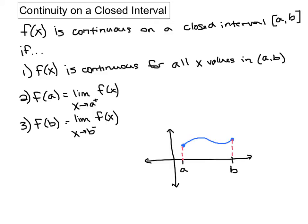If the limit approaching the left endpoint from the right — so if we're approaching our endpoint at a from the right side — our limit should equal the function value at that point. And the same thing for the other side: if we're approaching our right endpoint from the left, it should equal the function value at point b.